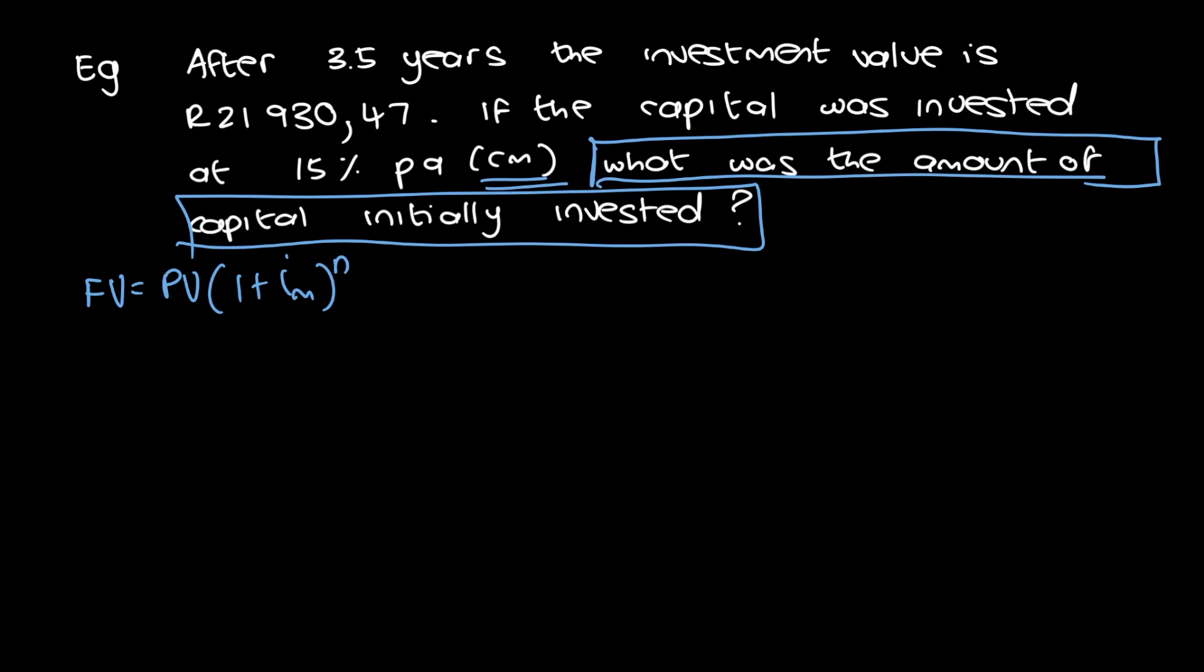So we go, okay, what's the formula where PV is the subject of the formula? So PV is equal to FV over 1 plus i over m to the power of n. Now you can either just learn it off by heart or you can just learn how to make PV the subject of the formula and go from there.